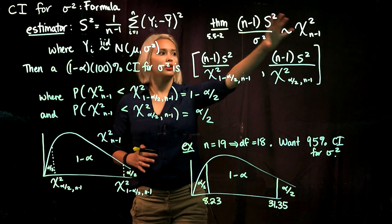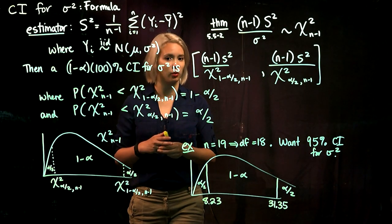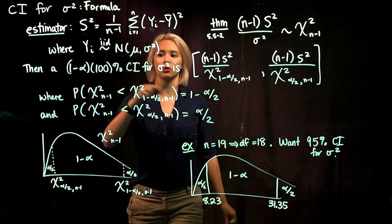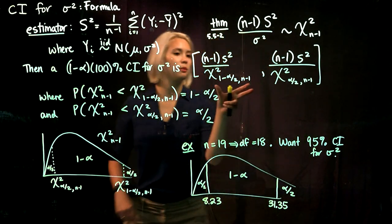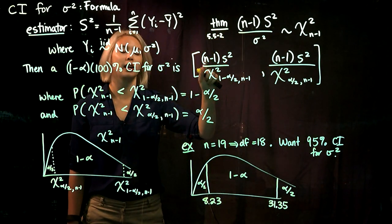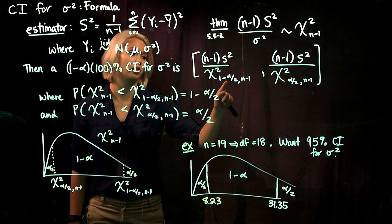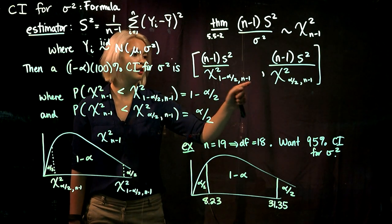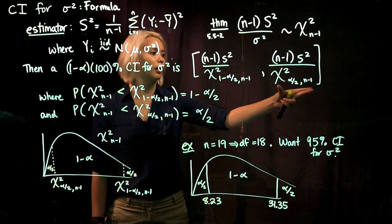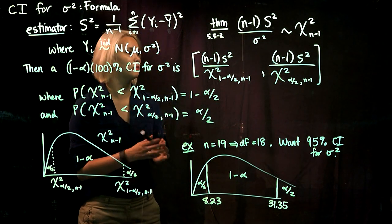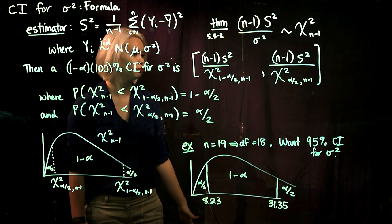We can use this theorem to find our confidence interval for sigma squared. If we set our level of confidence to 1 minus alpha, then we get a (1 minus alpha) times 100% confidence interval for sigma squared with two endpoints. The left endpoint is n minus 1 times our sample variance, divided by the quantile from a chi-squared distribution with n minus 1 degrees of freedom such that 1 minus alpha over 2 is below it. The right endpoint is n minus 1 times our sample variance divided by another quantile from the chi-squared distribution with n minus 1 degrees of freedom.